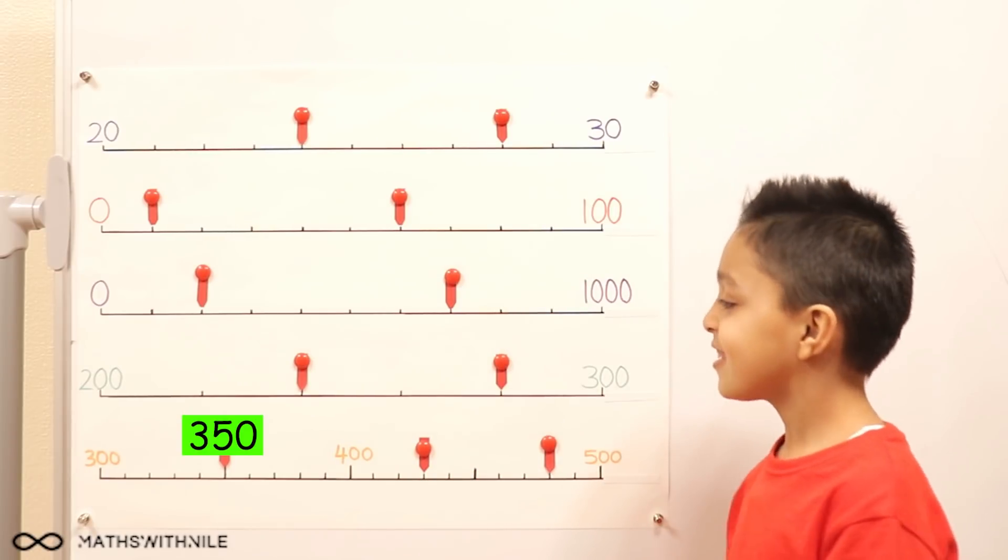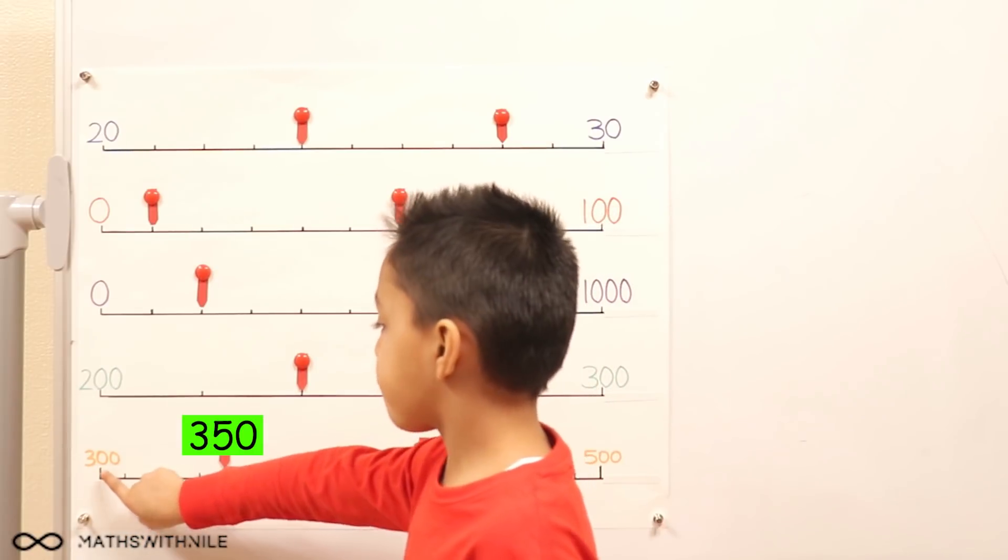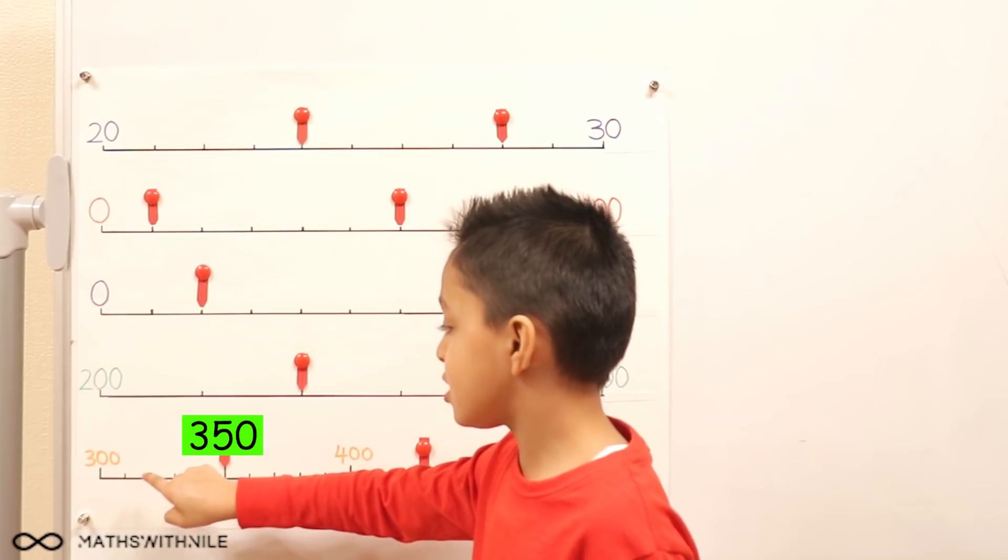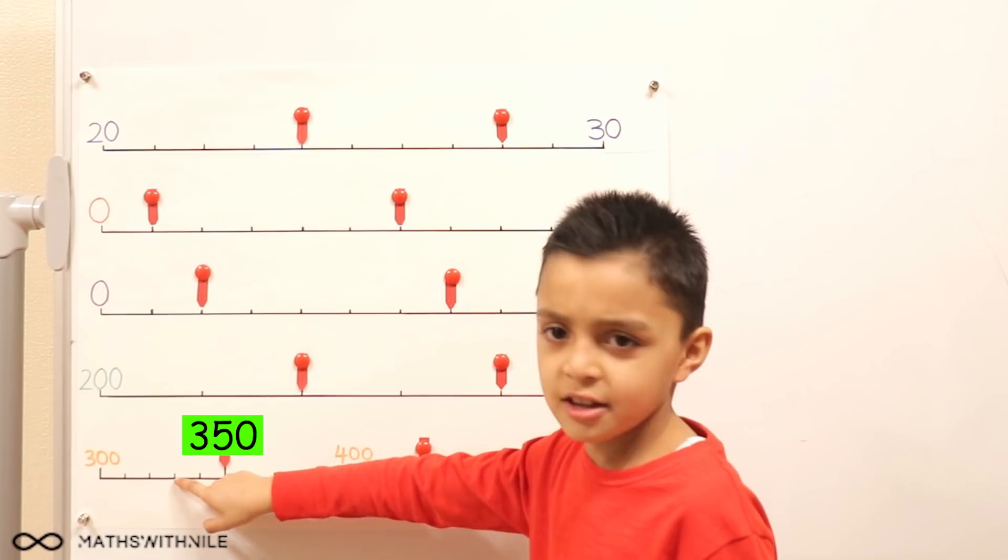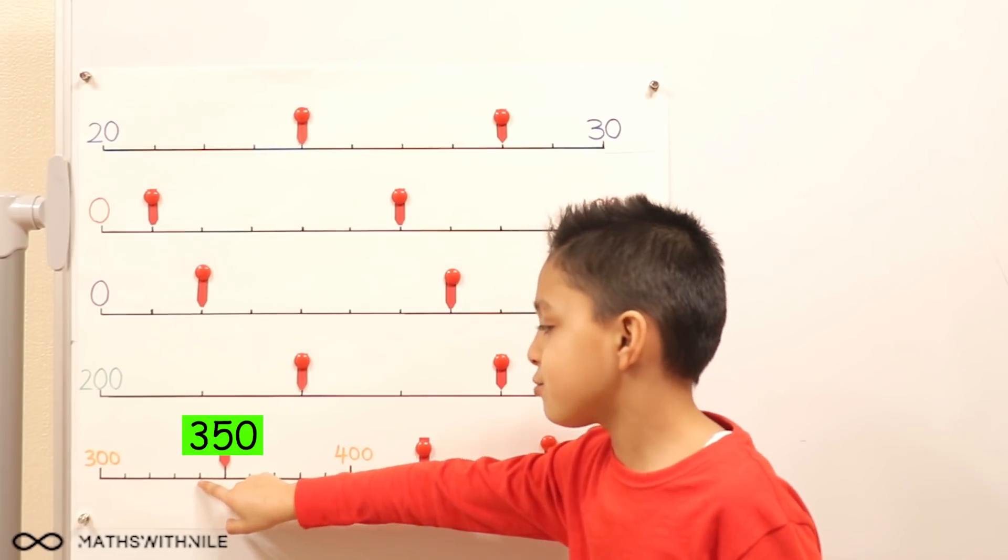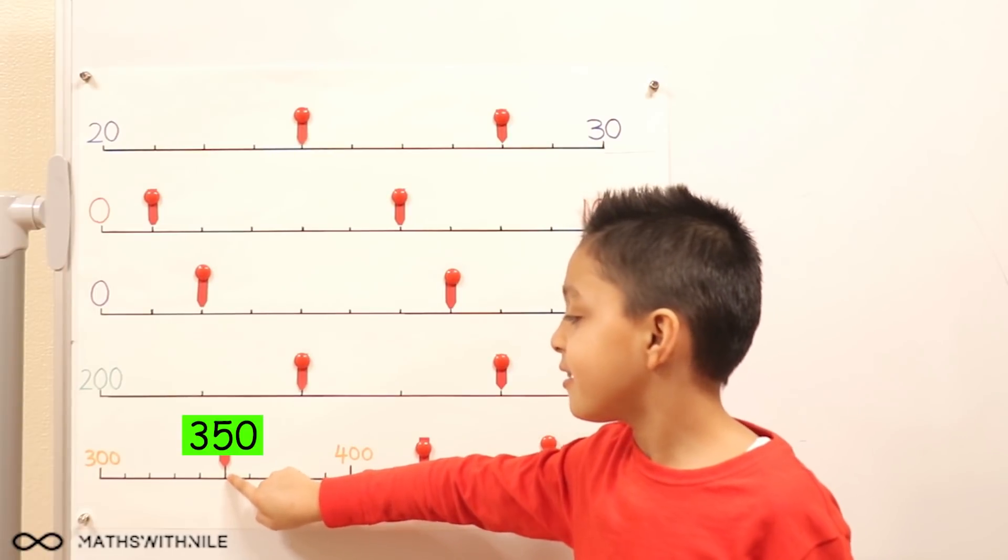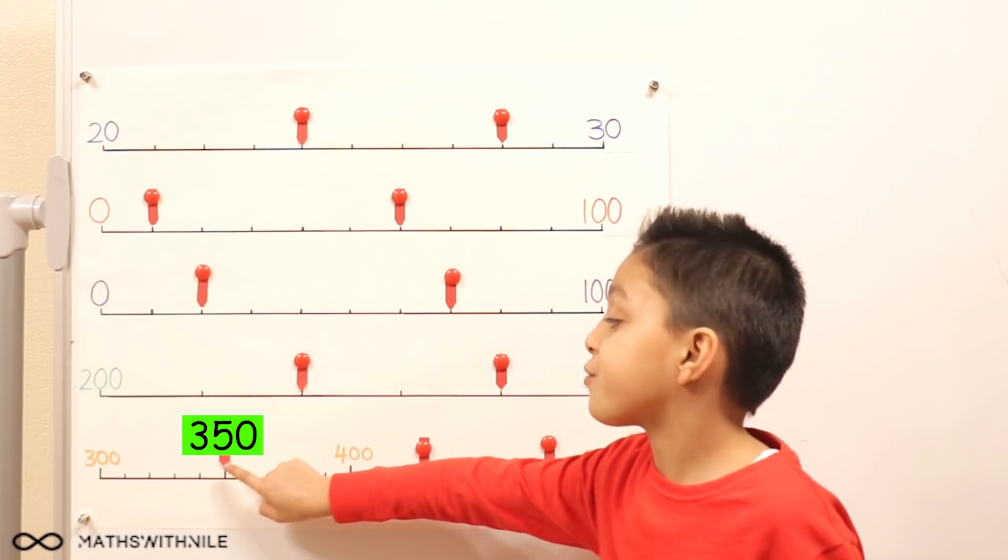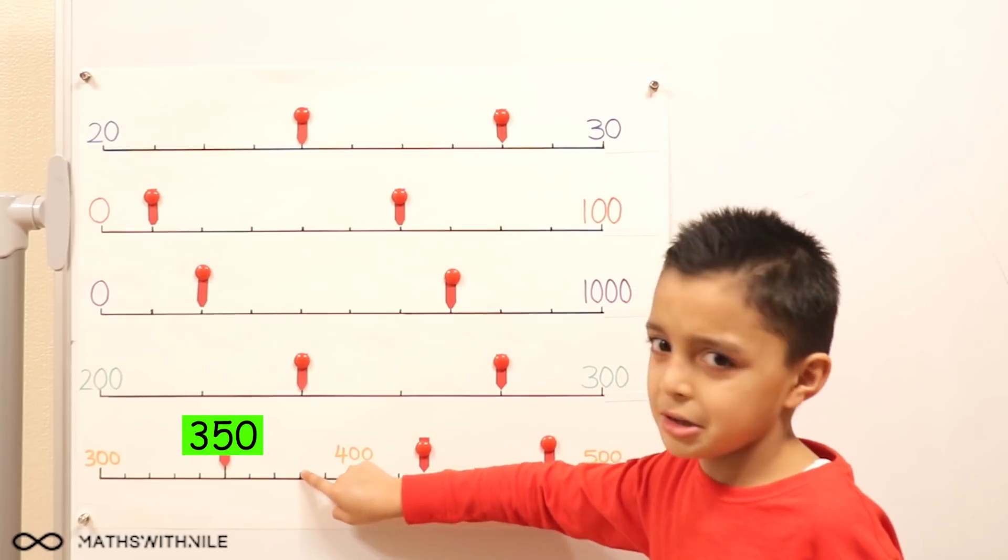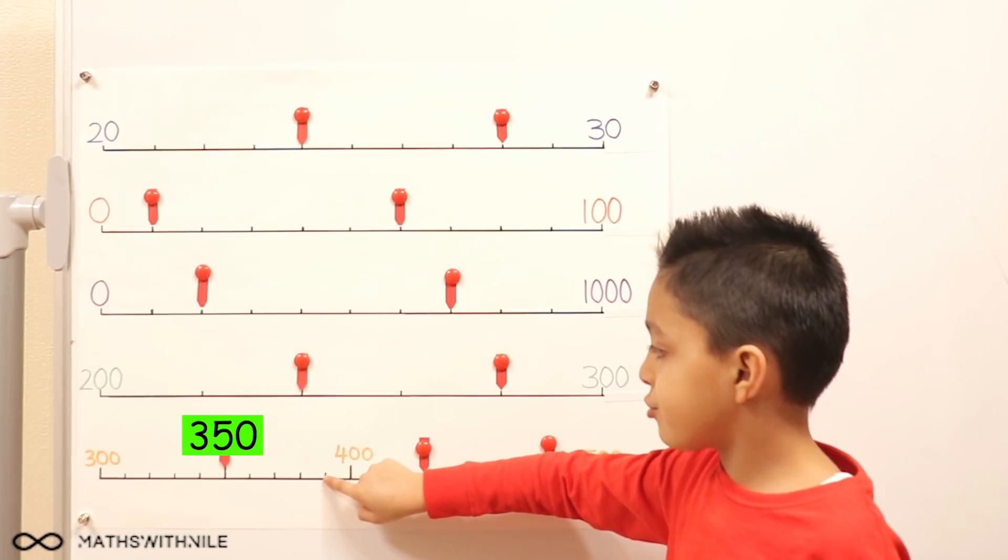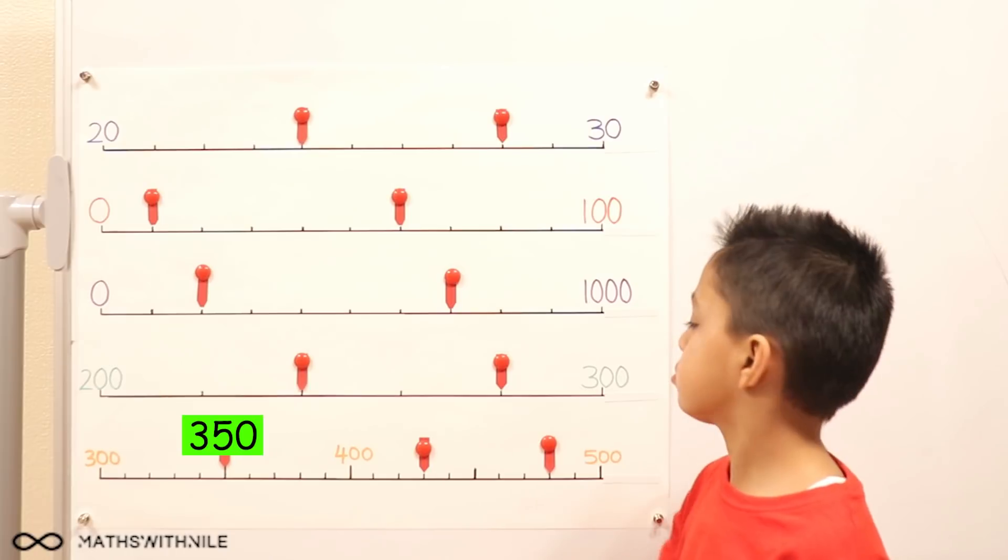So can you count all the way up in tens from the start of your scale to the end? 300, 310, 320, 330, 340, 350. Okay, so we'll stop there. That first one is 350. Continue. 360, 370, 380, 390, 400. So that works out.